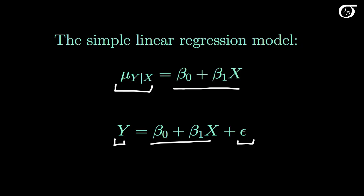Beta0 and beta1 are parameters. Beta0 is the y-intercept and beta1 is the slope. But what does that actually mean?